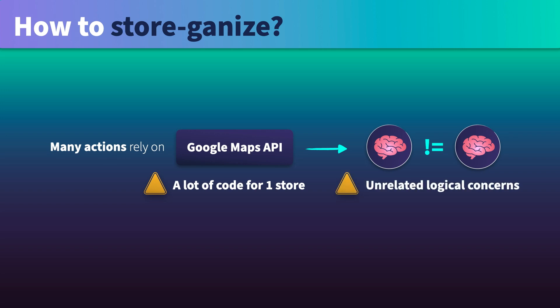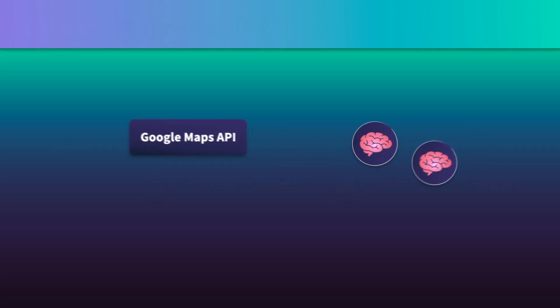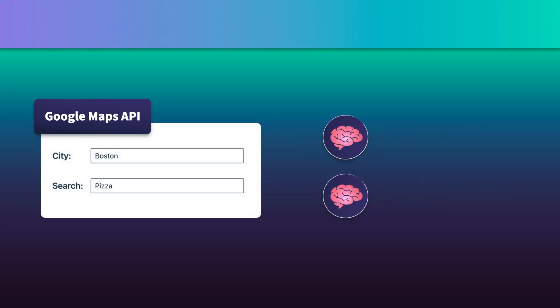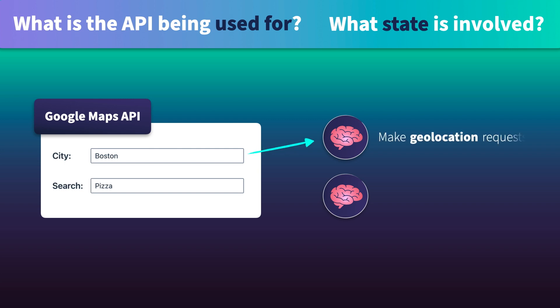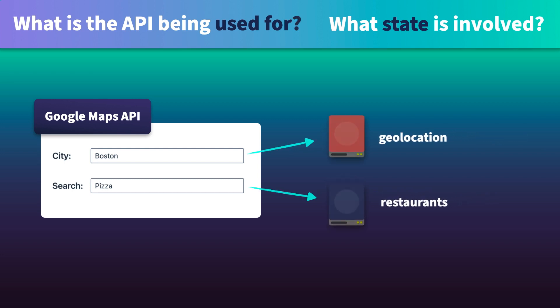To get clearer on how this should be storeganized, we could break it down and focus more on what is the Google Maps API being used for, and what state do we need to track. When we ask those questions, we know that the first input is being used to make geolocation requests, while the second is dealing with restaurants that match the search term. Based on this reasoning, it sounds like we can make two stores with their own individual logical concerns: Geolocation.js and Restaurants.js.